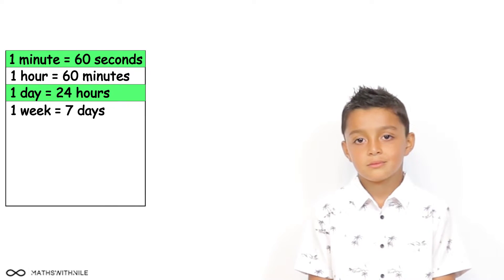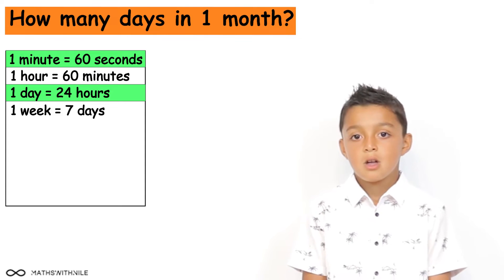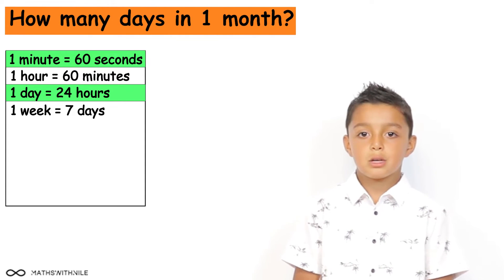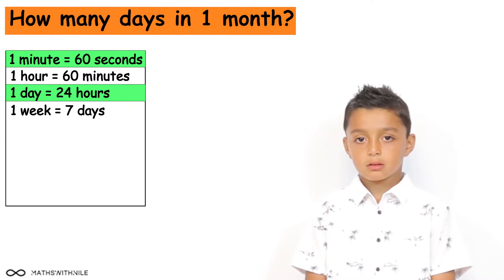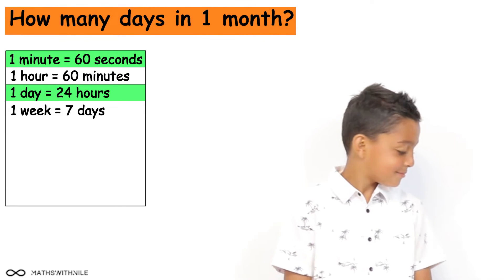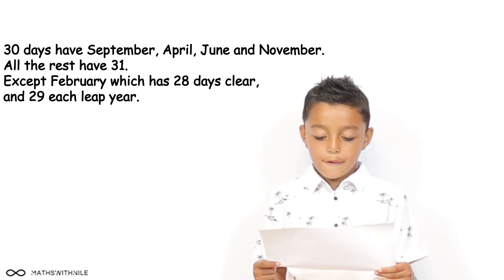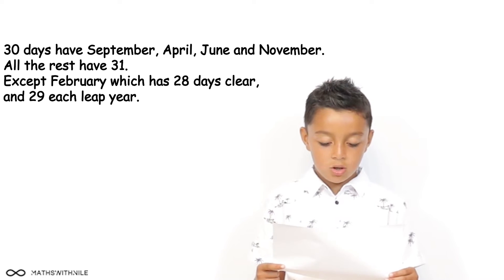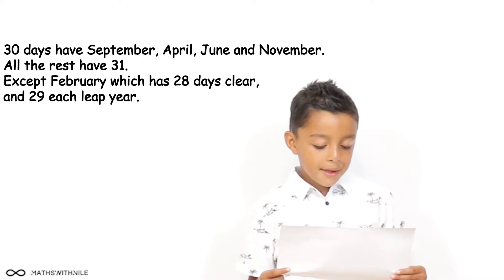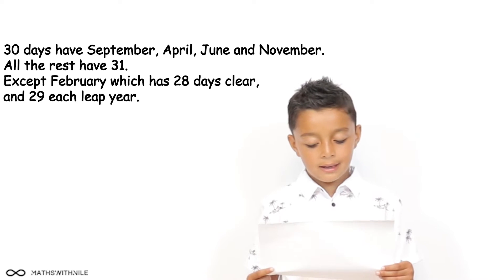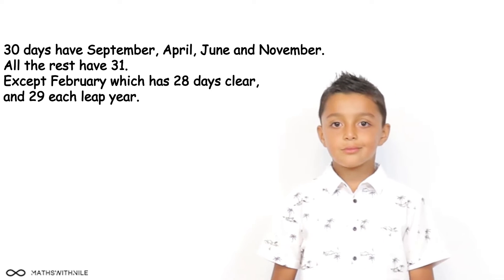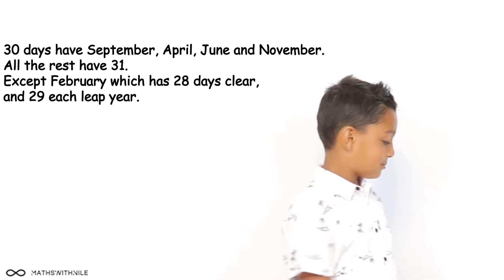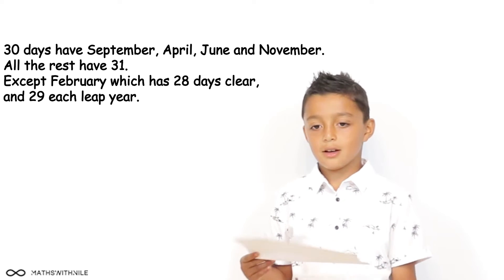Do you know how many days there are in a month? It's a bit tricky, and there can be a different amount of days in one month than another. We don't know all of them yet, but you have something there that can help you. What is it? A poem — a rhyme. So can you read it for us? 30 days have September, April, June and November. All the rest have 31, except in February, which has 28 days clear and 29 each leap year. Very good reading, Niall.